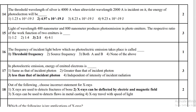Question 14: the threshold wavelength of silver is 4000 angstrom. When ultraviolet light of wavelength 2000 angstrom is incident on it, the energy of the photoelectron will be 4.97 × 10⁻¹⁹ joule.